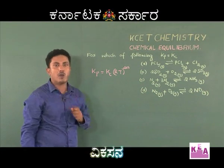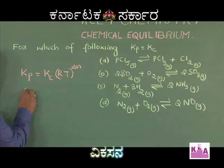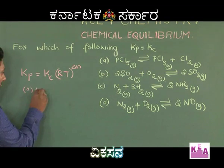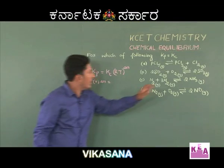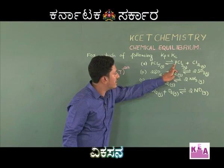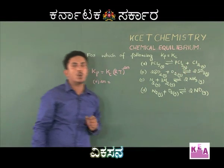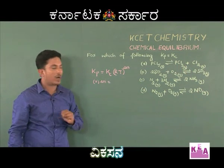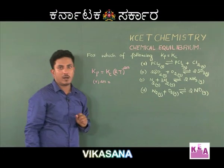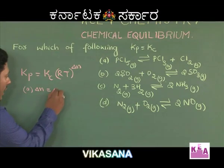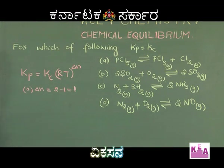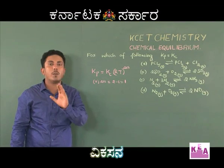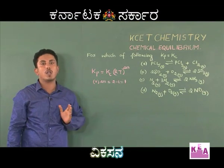For option A, ΔN equals moles of gaseous products minus moles of gaseous reactants. 1 mole of PCl₃ and 1 mole of Cl₂ are formed, giving 2 moles of product, and there is 1 mole of reactant. Hence, ΔN = 2 − 1 = 1. So for this reaction, Kp will not be equal to Kc.